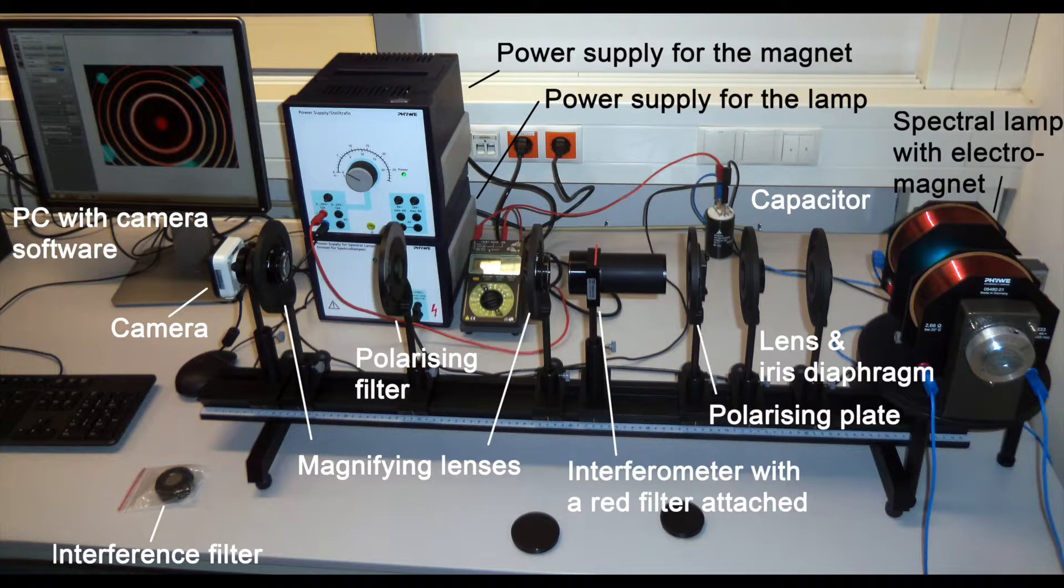Additional components include three lenses, iris diaphragm, polarizing filter, polarizing plate lambda quarter, and interference and red filters for wavelength selection.